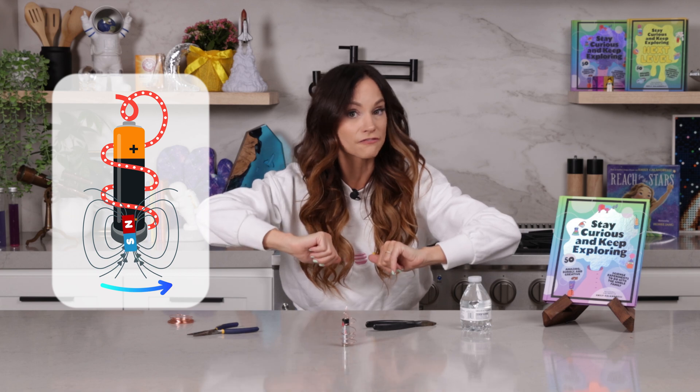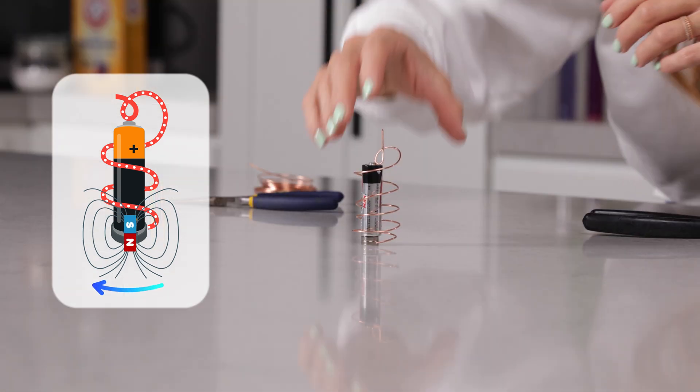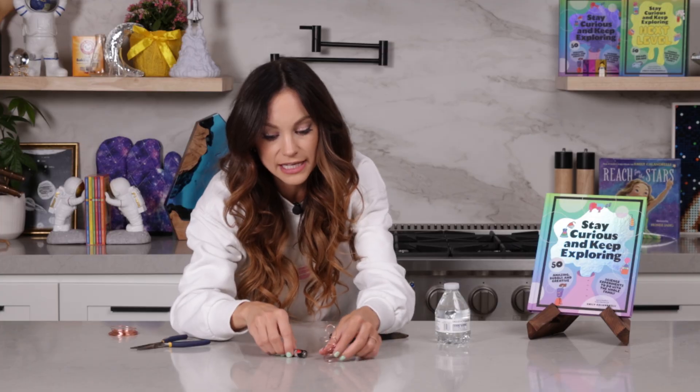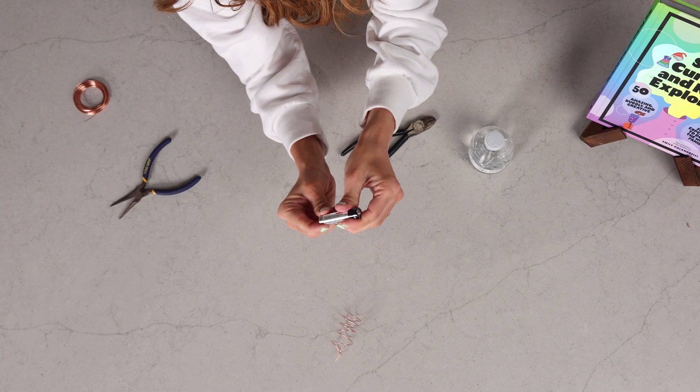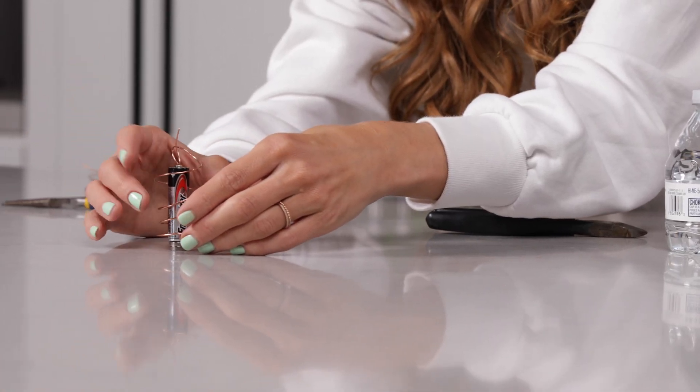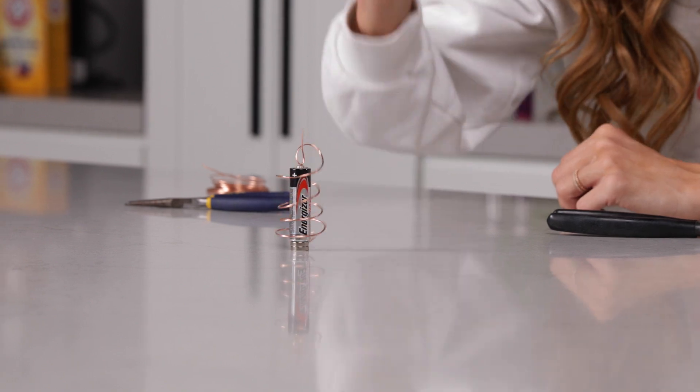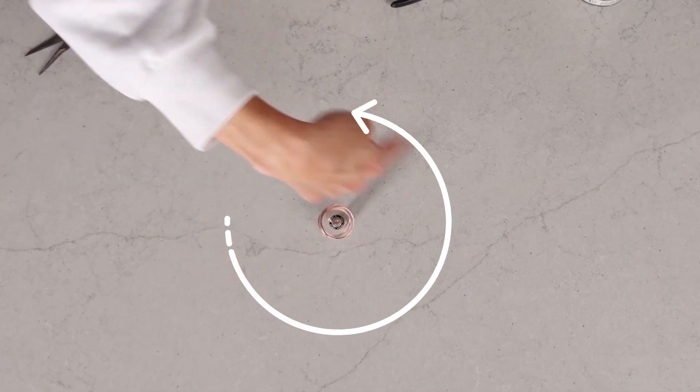Here's the cool thing. If you flip your magnetic field, the Lorenz force will change directions. So let's go ahead and flip our magnets the other way. So you're basically shifting the north and south poles and put it back on. And now it spins in the opposite direction. So now it's spinning this way. Look at that.